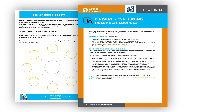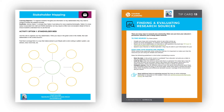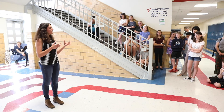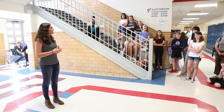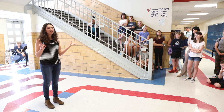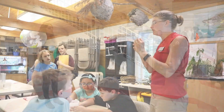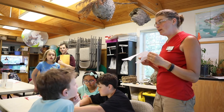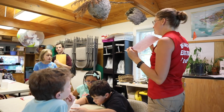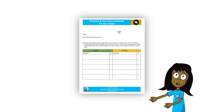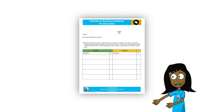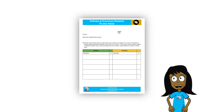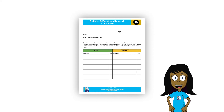Engaging stakeholders with varying viewpoints helps youth understand that environmental issues are complex and can help build empathy for others. After thorough research has been conducted, everyone should come together as a group to review what has been learned about the policies and practices relevant to the chosen issue. Youth will need to synthesize their research in preparation for choosing one policy or practice to focus on changing in Step 4. The policies and practices related to our issue handout is helpful in organizing thoughts during this class discussion, helping youth keep track of which policies and practices are important to them.